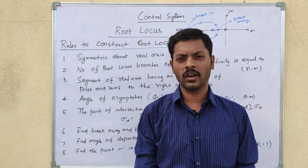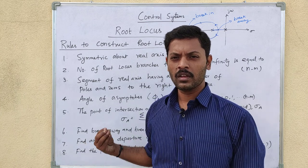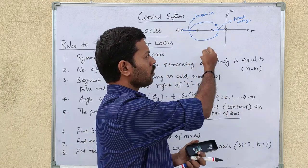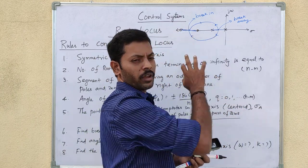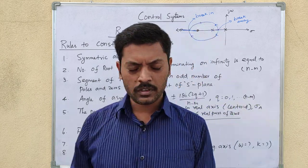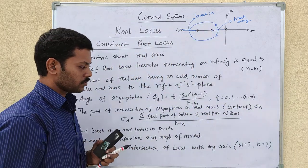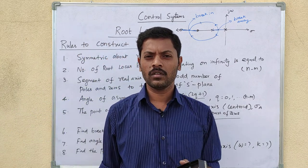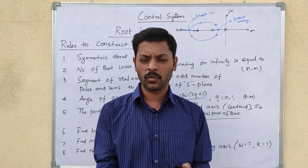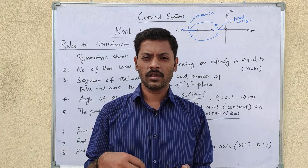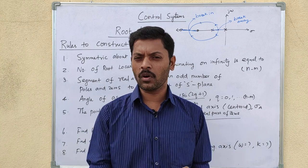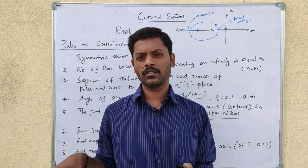This is the breakaway and break-in point — these are easier to find with an example. The sixth rule is to find the angle of departure and the angle of arrival. If there are complex poles in the open loop system, we find the angle of departure from those complex poles. For complex zeros, we find the angle of arrival.